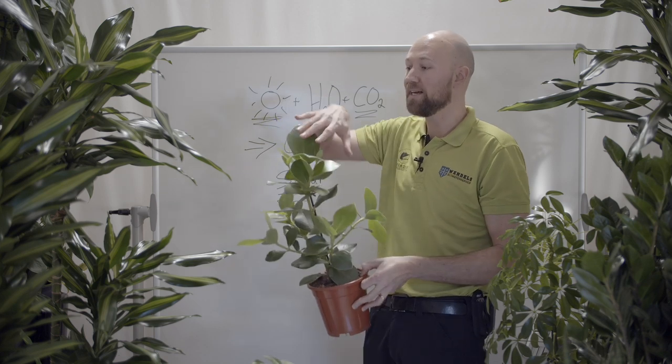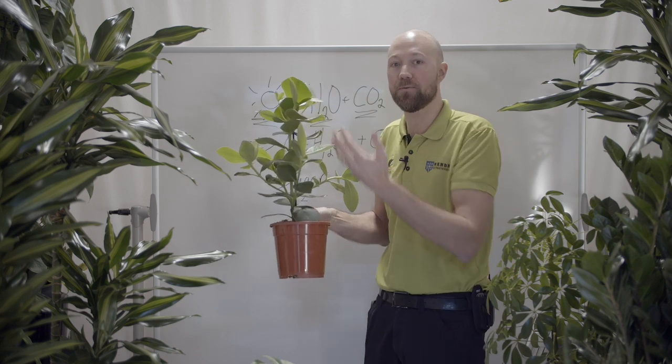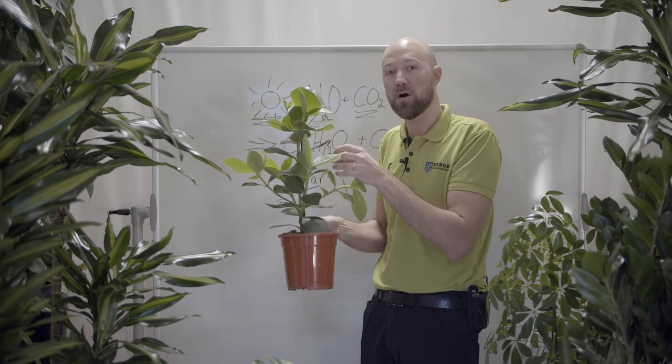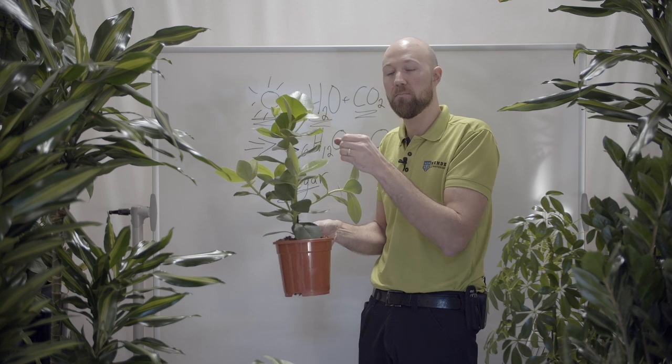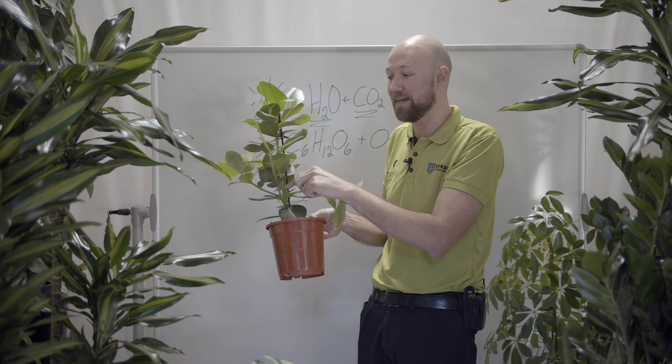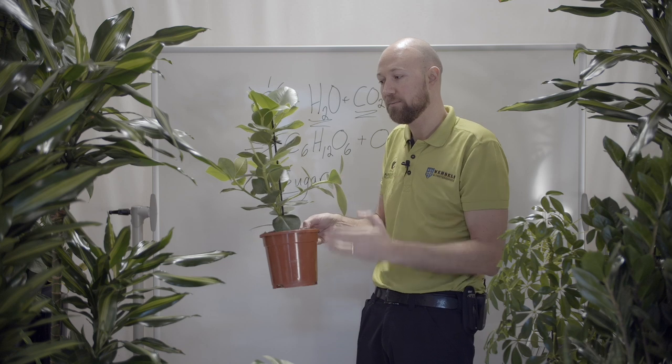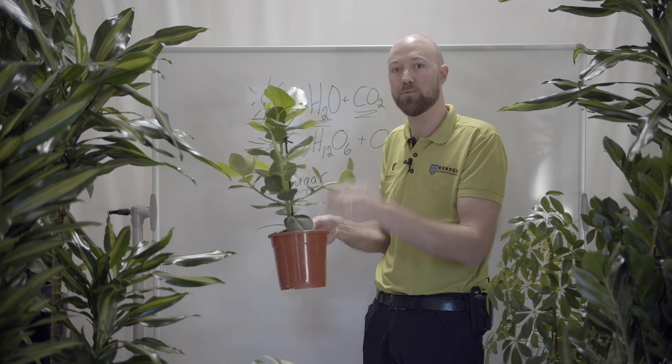because when it gets more leaves, it needs to move more water from the roots up and down. The plant will automatically create more highways. And what happens then is that the stems and the branches will start to get thicker.